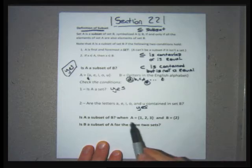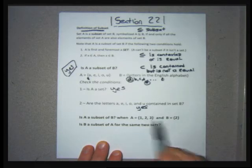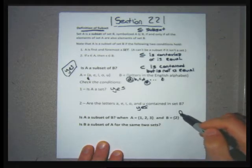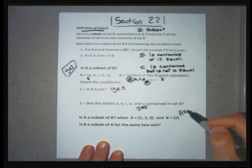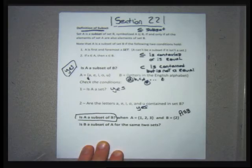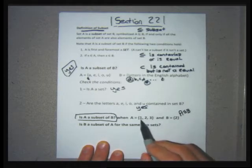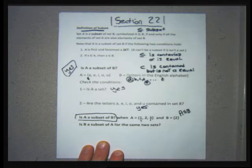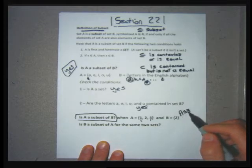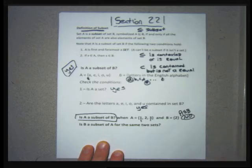Is A a subset of B when A is the set {1, 2, 3} and B is the set {2}? The answer is no, because the numbers 1 and 3 are in set A but not in set B. Every element in the set to the left of the subset sign must be contained in the set to the right.